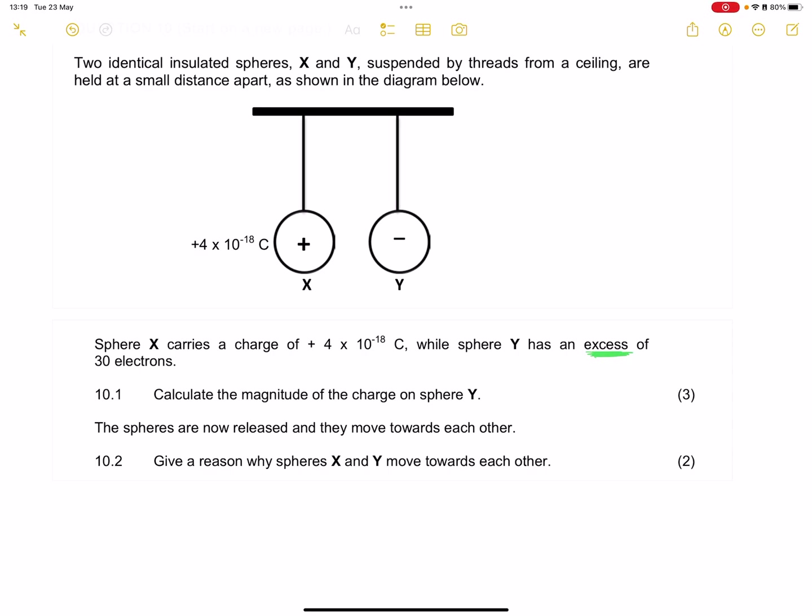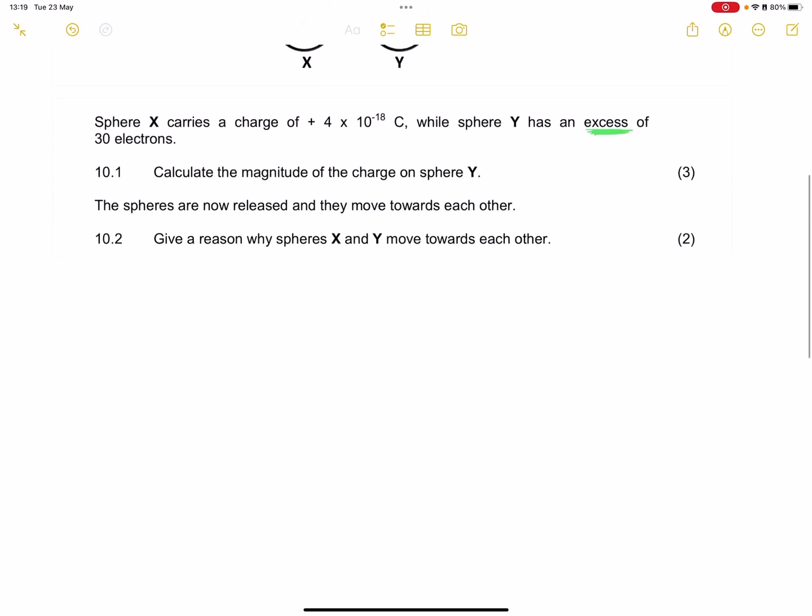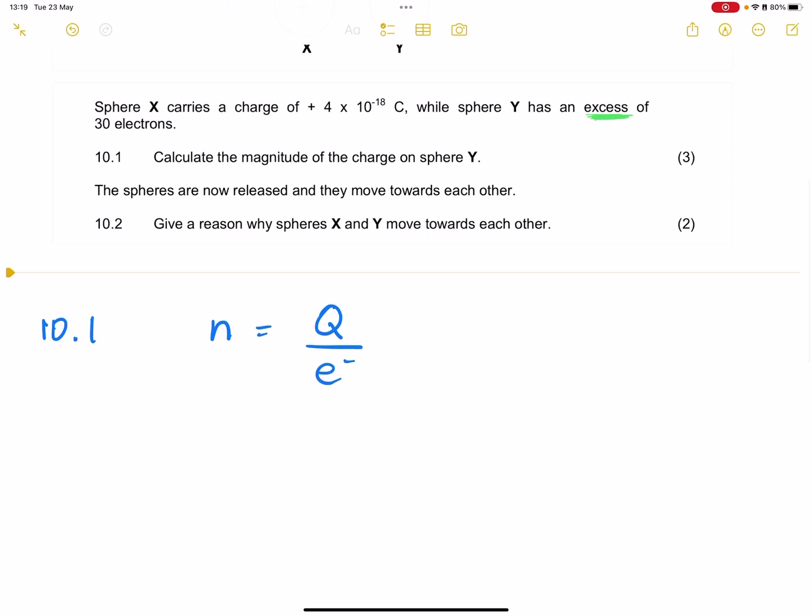So they say to us, calculate the magnitude of the charge on sphere Y. What we are going to do: we know that the number of electrons will always be equal to the charge divided by the unit charge of an electron. In this case, we know that we've got 30 electrons in excess. We want the charge, but we know the unit charge of an electron is 1.6 times 10 to the negative 19. So what we're going to do is just cross multiply there. So Q times 1 will be Q, and 30 multiplied by negative 1.6 exponent negative 19.